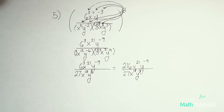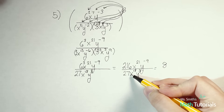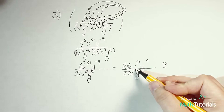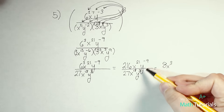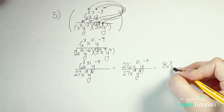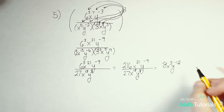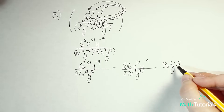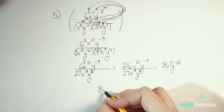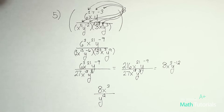Now I'll divide, rewriting with 6 cubed simplified. 6 cubed is 216, so I have 216 x to the 21st y to the negative 9th over 27 x to the 18th y to the 3rd. Divide the whole numbers: 216 divided by 27 is 8. x to the 21st divided by x to the 18th — when dividing exponents we subtract — 21 minus 18 is 3. y to the negative 9 over y to the 3rd: negative 9 minus 3 is negative 12. Since we can't leave a negative exponent, my final step is to cross the line, change the sign with my y. Final answer: 8x cubed over y to the positive 12th.